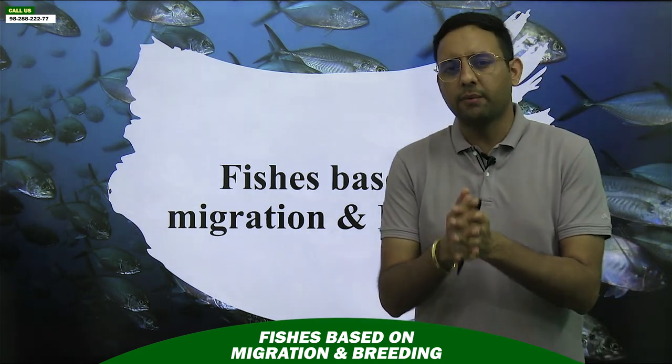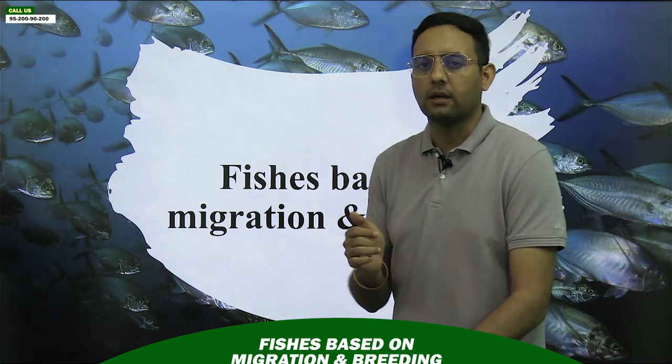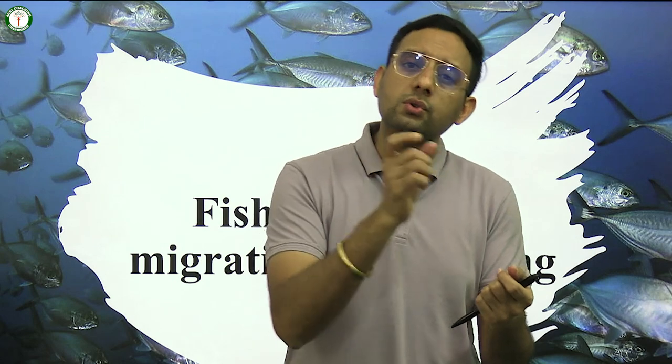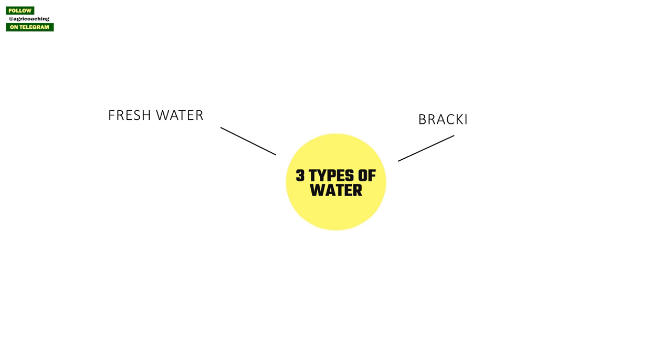Now let's start today's session. We will discuss fishes based on migration and breeding. There are many species of fishes with different habits — some stay in fresh water and move to saline water for breeding, while others stay in saline water but move to fresh water for breeding. First, let's understand the three types of water: fresh water, brackish water, and saline or sea water.